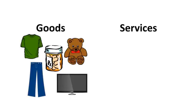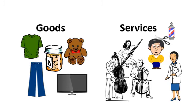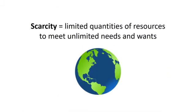Let me pause for a moment and explain what goods and services mean. A good is something physical or tangible, such as clothing, a smart TV, medicine, or a teddy bear. A service is an action or activity performed. Examples of services include getting treated by a doctor, going to a concert to listen to musicians play, or getting a haircut. Whether we're talking about goods or services, or needs or wants, the main point is that scarcity is the fundamental problem economics is trying to deal with.